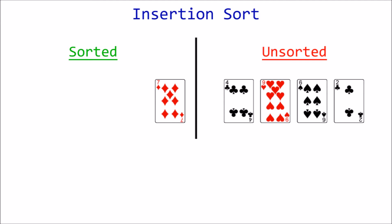Insertion Sort works by taking each unsorted element and inserting it into its correct position within the sorted section. In this example, we'll store the card to insert here at the bottom.